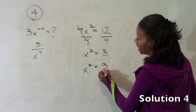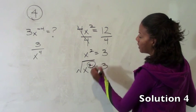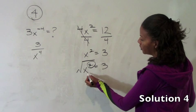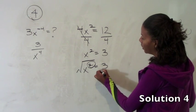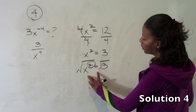So if x squared equals 3, to undo a square, we have to take the square root because squares and square roots are inverse operations. So if you take the square root of the left side, you have to take the square root of the right side.